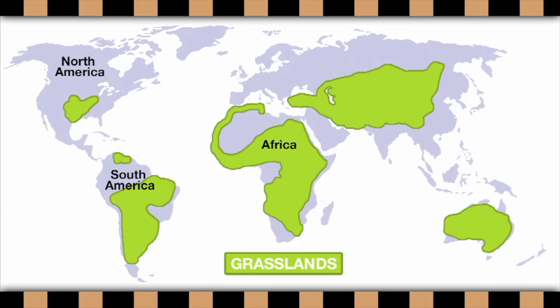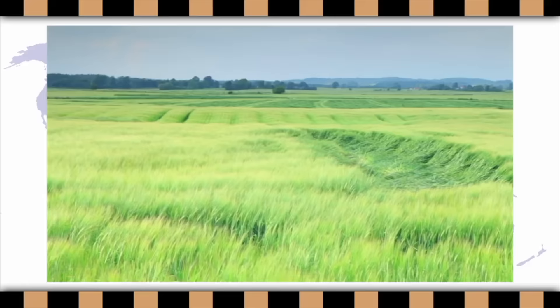The Grassland Habitat. Grassland habitats are found all around the world. The Great Plains of the United States are grasslands. You'll also find grasslands in South America, Africa, Europe, Asia, and Australia too. Grasslands are typically large, wide open spaces. Most plants found on the grasslands are grasses.